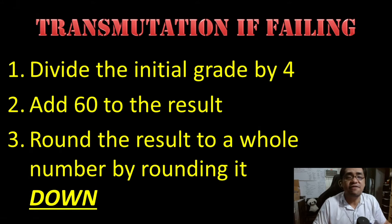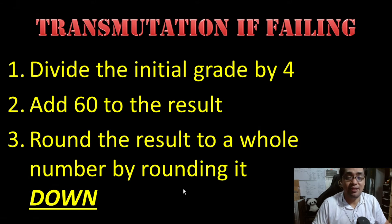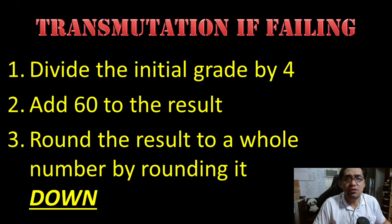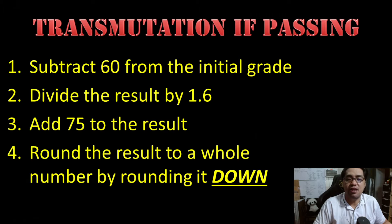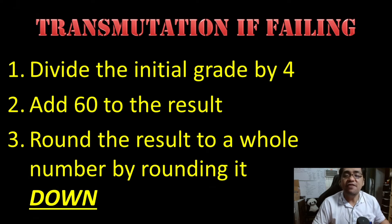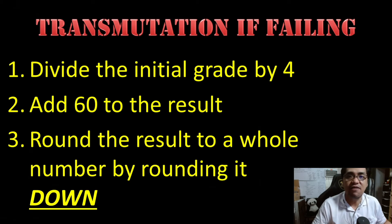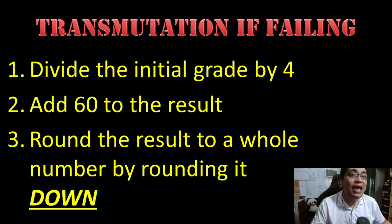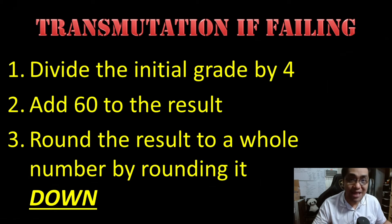And how do you do the transmutation if the initial grade is a failing grade? Divide it first by four, then add 60 to the result, and round the number down to a whole number. In short: divide by four, plus 60, round down. Please note that the round-down final step for both passing and failing initial grade transmutation is very important. Even if the result is 85.99, you still round that down to 85. If you get 91.5, you don't round it off to 92 — you round it down to 91. 89.99 is not a 90, it's an 89. 87.6 is not an 88, it's an 87. You round it down to a whole number. That's how the transmutation formula works.